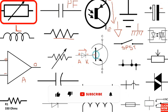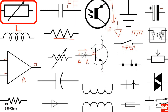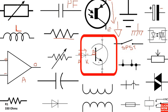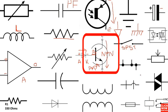Here we have a transistor. This is a simple transistor containing three terminals: base, collector, and emitter. This is an NPN transistor because the arrow points from base to emitter. When the transistor receives the control signal from the base, the signal will pass from collector to emitter.